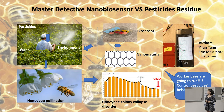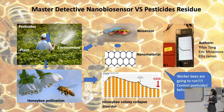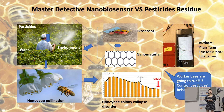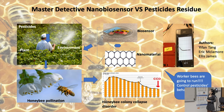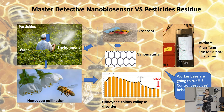The biosensor connects to the portable device using electrochemical impedance spectroscopy in the tablet, so the honeybee keepers can read the readings directly on their phone. When the reading reaches a specific level, it will warn the honeybee keepers that it's time to stop spraying the pesticides.